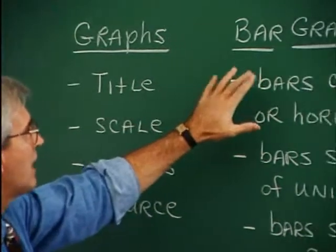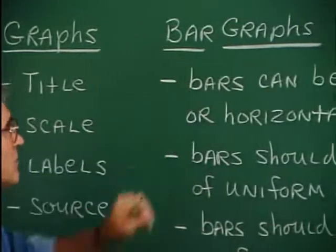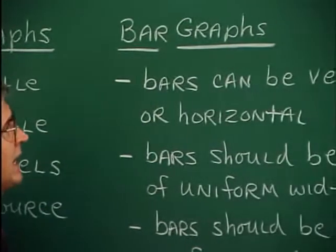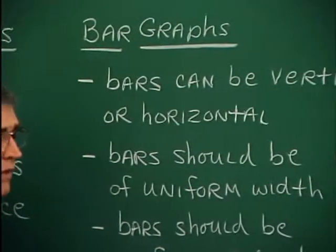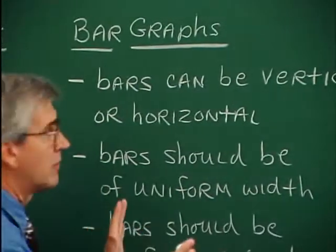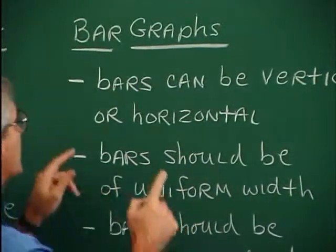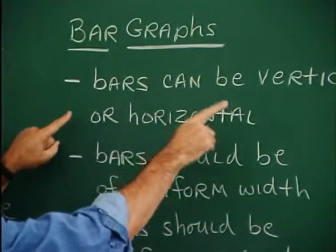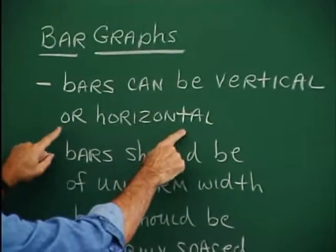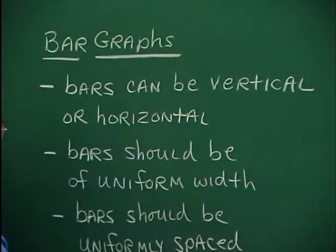The first kind of graph we're going to talk about is a bar graph. With bar graphs — and you've seen them before, I'm sure — the bars can either be vertical or horizontal. That's important to know.